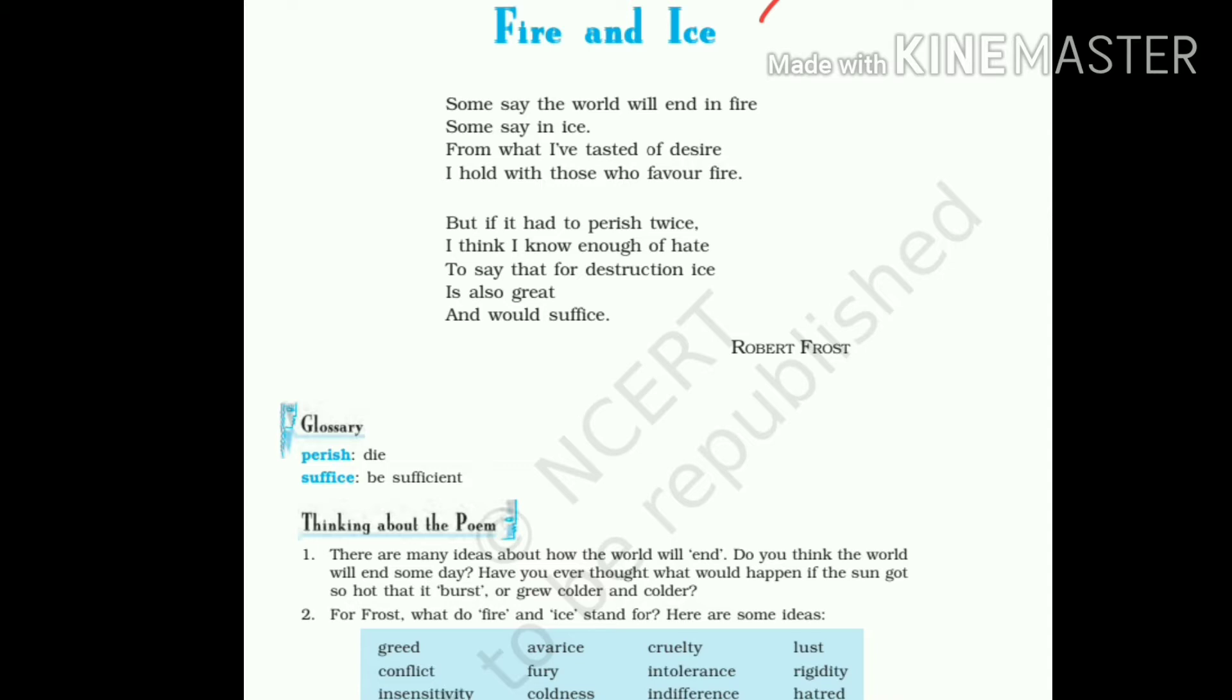This poem is titled Fire and Ice. These two are contradictory elements - one is fire and the second is ice, the burning fire and the cold ice. The poet has chosen this title because in this poem he wants to tell the reasons responsible for the destruction of this universe.